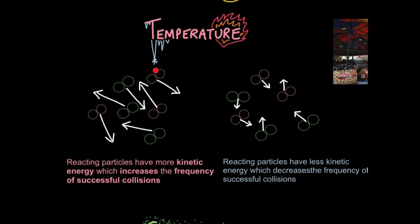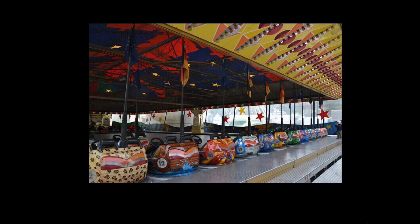If you increase the temperature, you increase how much kinetic energy these particles have and therefore they move faster — this increases the frequency of successful collisions. If you lower the temperature, they move slower because they have less kinetic energy, which decreases the frequency of successful collisions. Raising temperature will cause the reacting particles to have more kinetic energy, which increases the frequency of successful collisions. Similarly, lowering temperature means the reacting particles have less kinetic energy — movement energy — which decreases the frequency of successful collisions. It's like cranking up the voltage powering the dodgem cars so they move much faster and smack into each other more regularly.